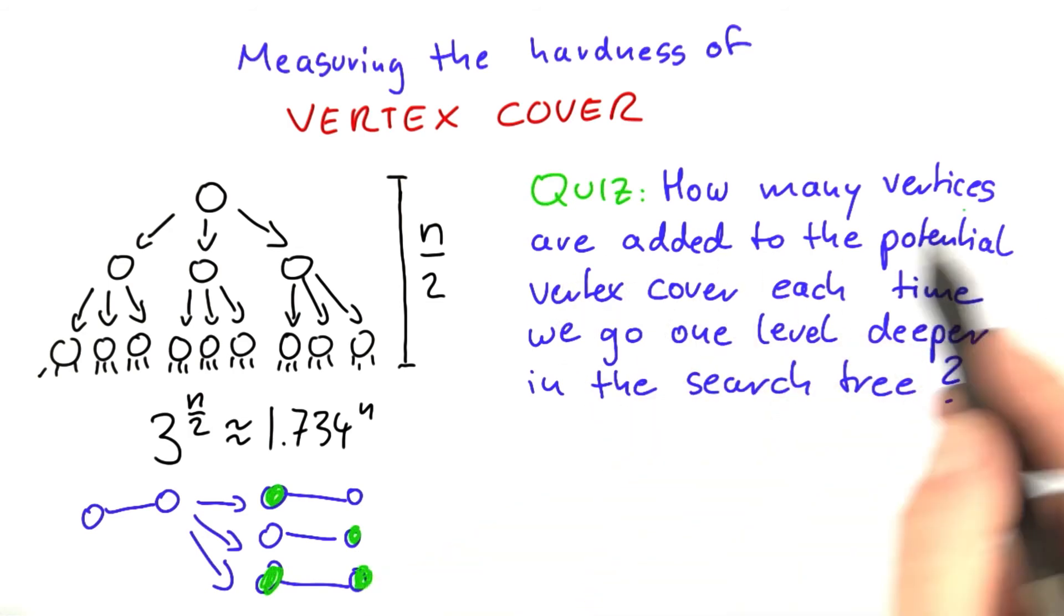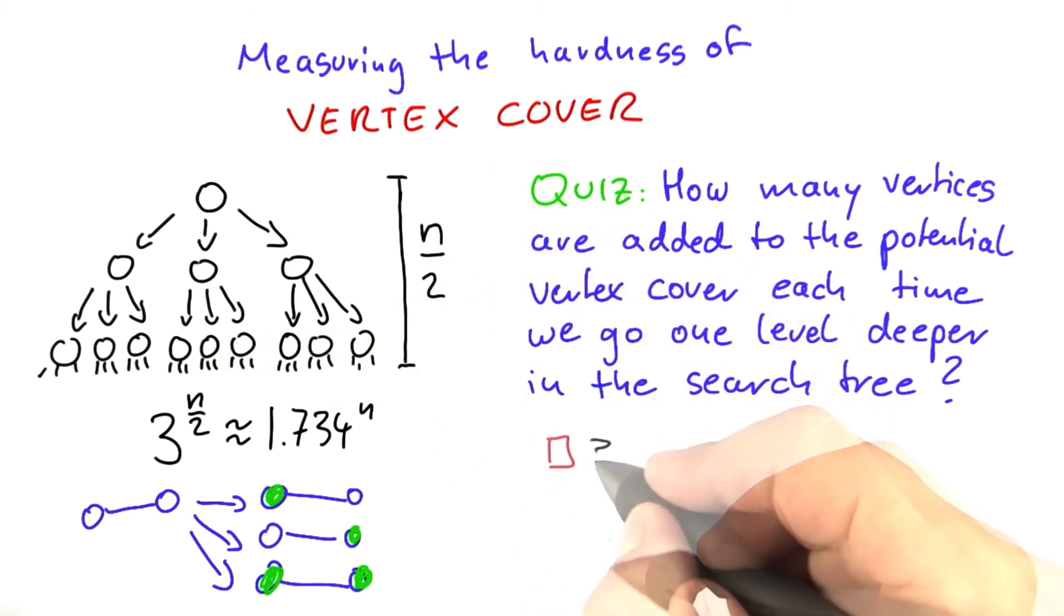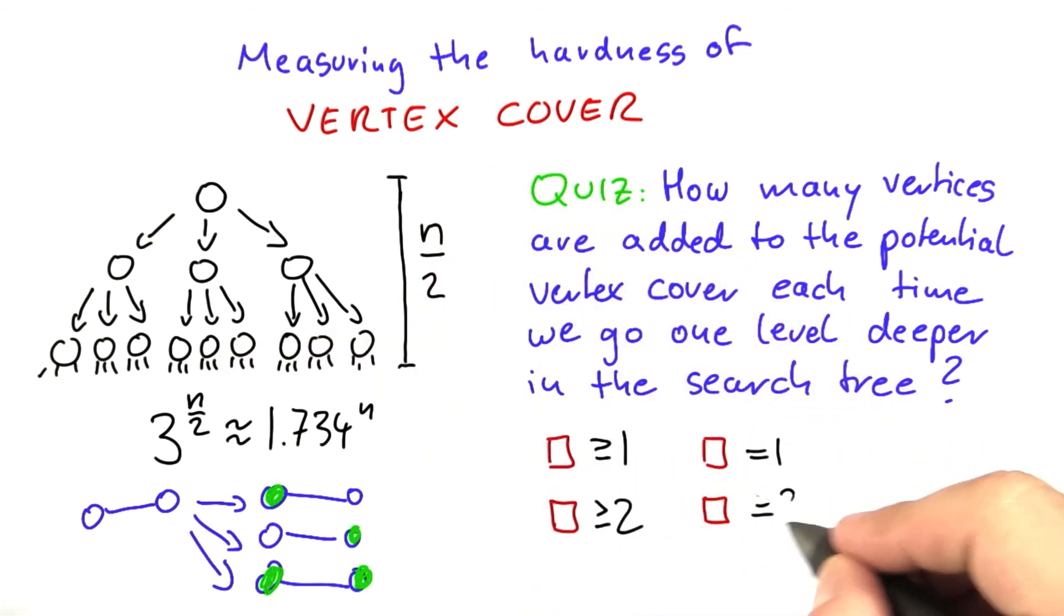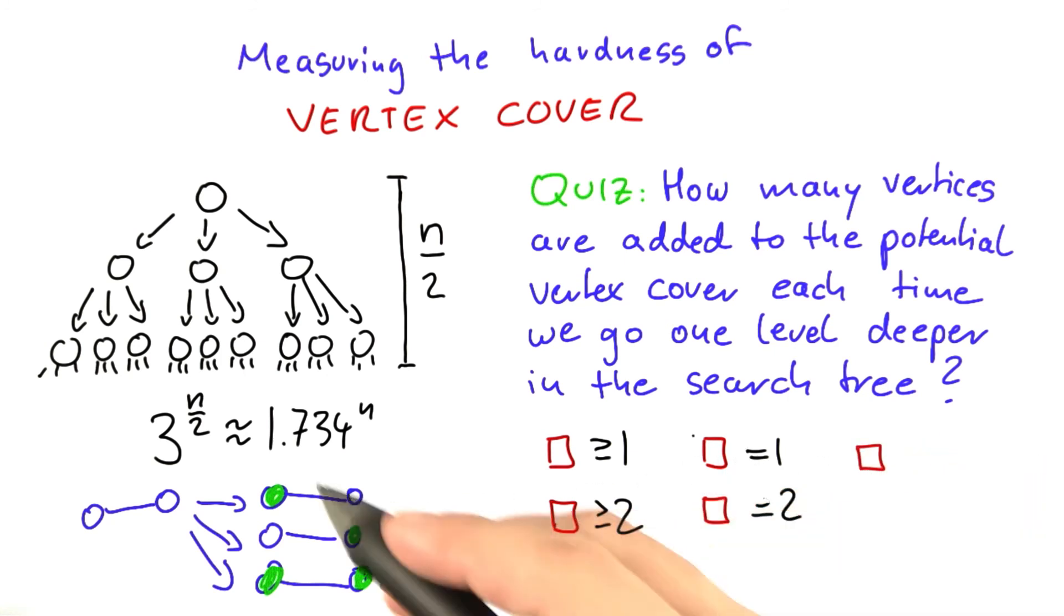So now it's a very easy quiz, actually. So how many vertices are added each time we go one level deeper into the tree? At least one, at least two, exactly one, exactly two, or is this something that actually depends on the structure of the input graph?